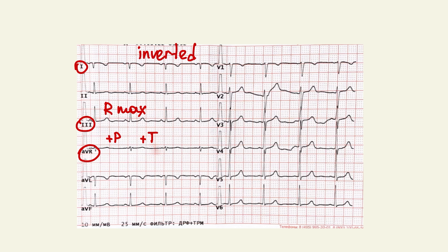Misplacement of the limb lead electrodes is a common cause of ECG abnormality, and it may simulate pathology such as ectopic atrial rhythm or myocardial ischemia. Thank you for watching.